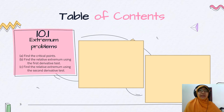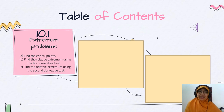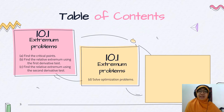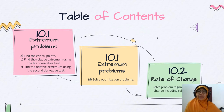The first application is extremum problems. In extremum problems, we will discuss about critical points and relative extremum using two tests: the first derivative test and the second derivative test. And finally, using this knowledge, we will solve optimization problems. The second application is to find rate of change.